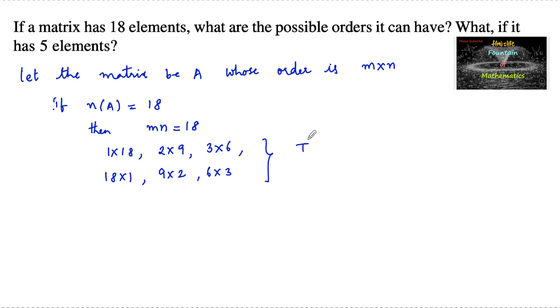So there are six possible orders for which n(A) is equal to 18. Similarly, if n(A) is equal to 5, and 5 is a prime number, the product mn is equal to 5.